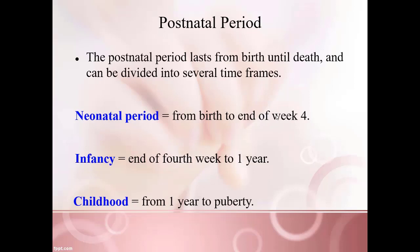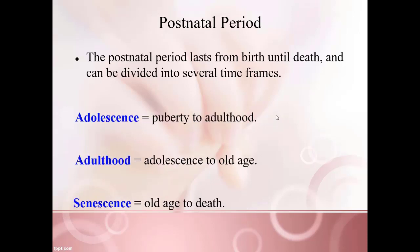Now the baby has been born and we are entering the postnatal period, which starts from birth and ends at death. This long time frame is divided into several smaller phases. The neonatal period is from birth to the end of the first month. Infancy is from the end of the first month to the end of the first year. Childhood is from the end of the first year to puberty. Adolescence is from puberty to adulthood. Adulthood is from adolescence to old age. The very last stage of life is called senescence, from old age until death. You should be familiar with these terms and their correct order.